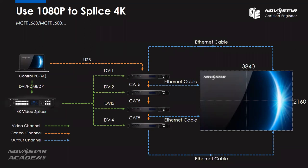The video splicer will split the video source into four parts and provide this video source to each sending card. For the loading part, one sending card loads the top right of the screen, one loads the top left, one the bottom left, and one the bottom right. So totally we divide the 4K screen into four parts — a 2x2 area. In this structure we have a 4K-capable control PC, a 4K video splicer, and four M-Control 660 sending cards. If we consider redundancy, we need to double the sending card amount to 8 pieces.